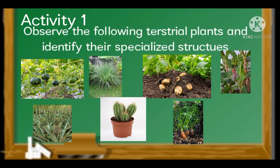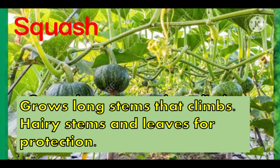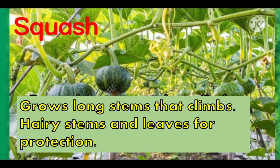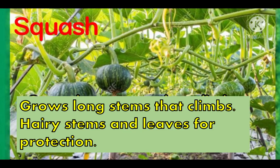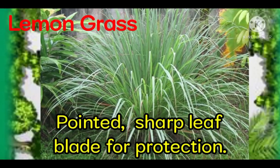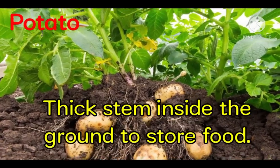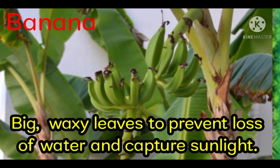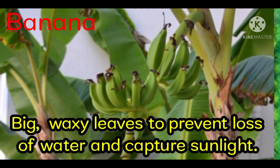Let us proceed to Activity 1. Observe the following terrestrial plants and identify their specialized structures. Observe the squash — it grows long stems that climb. Hairy stems and leaves are for protection against animals. Lemon grass has pointed, sharply bladed leaves for protection. Potato stem is inside the ground and has a thick stem to store food. Banana has big, waxy leaves to prevent loss of water and capture sunlight.